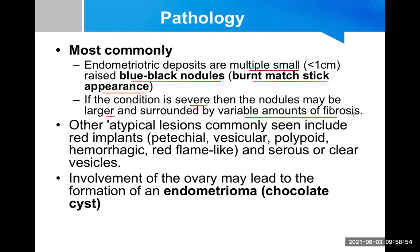Fibrosis usually occurs in more chronic cases and results in many clinical features — for example, adhesions, retroverted uterus due to uterine adhesion, and kinking of the fallopian tube leading to infertility. Other atypical lesions include red implants — which may look petechial, vesicular, polypoid, hemorrhagic, or red flame-like — and clear vesicles.